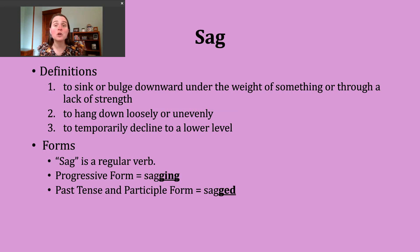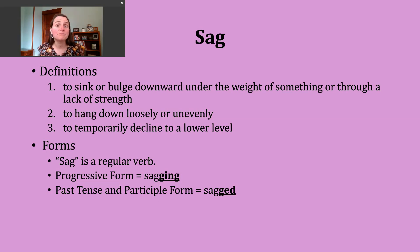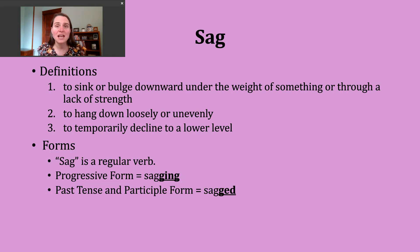A third way the verb sag gets used is to mean to temporarily decline to a lower level. Sometimes — and you'll see some example sentences later in this video where I talk about sales or prices of something — going to a lower level or lower amount, we could use this verb to describe that action.